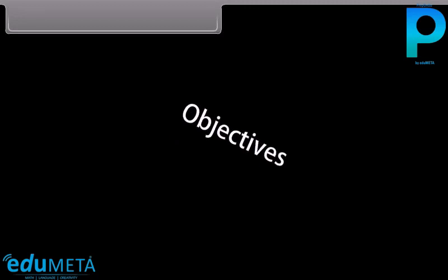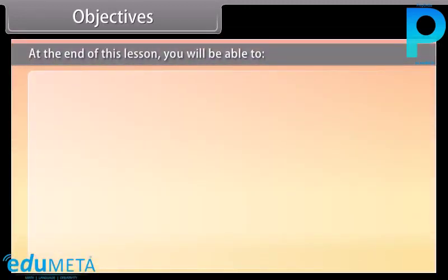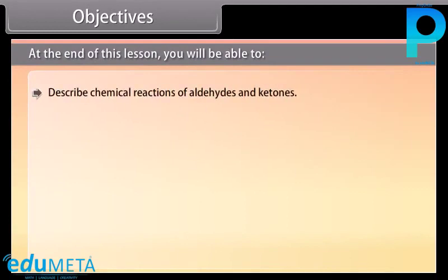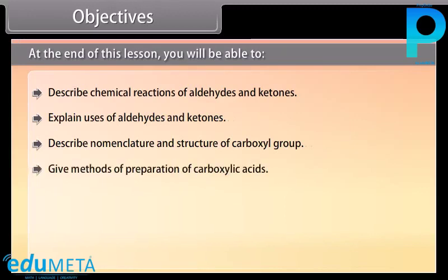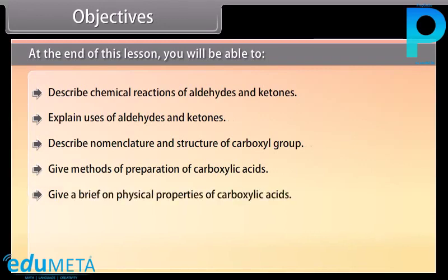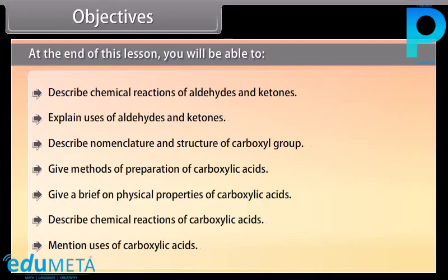Objectives. At the end of this lesson, you will be able to: describe chemical reactions of aldehydes and ketones; explain uses of aldehydes and ketones; describe nomenclature and structure of carboxyl group; give methods of preparation of carboxylic acids; give a brief on physical properties of carboxylic acids; describe chemical reactions of carboxylic acids; mention uses of carboxylic acids.